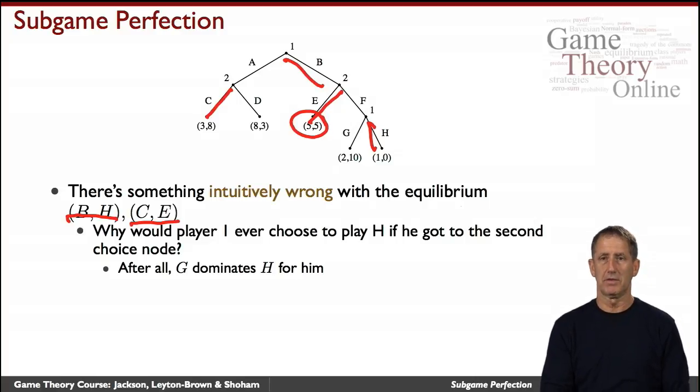Let's first convince ourselves that this is indeed a Nash Equilibrium. Let's hold Player 1's strategy fixed and see if Player 2 can profitably deviate from their current response. They could go D instead of C, but that wouldn't impact the outcome at all given that Player 1 is going down B. The other thing they could do is go down this way, but that would worsen their payoff because they would end up here with a payoff of 0 rather than the 5 they're getting.